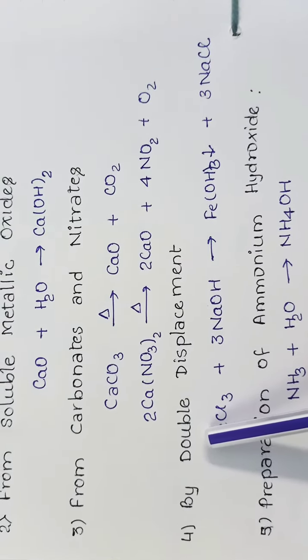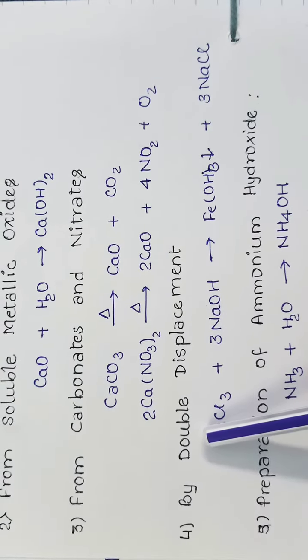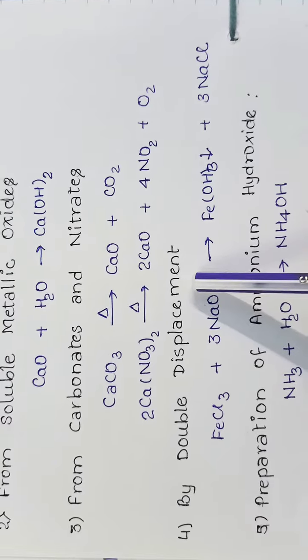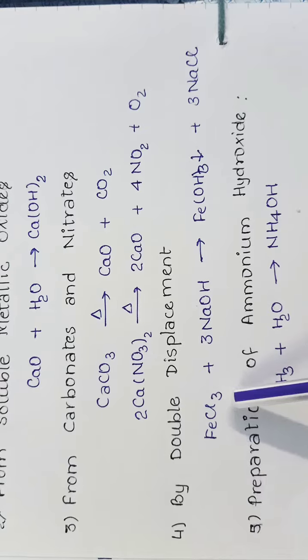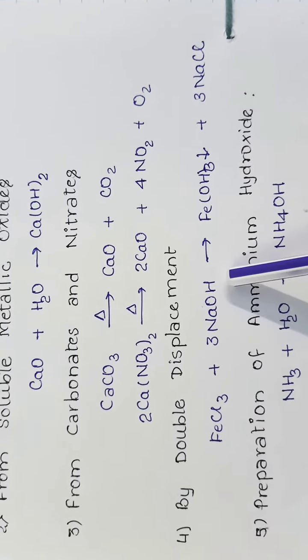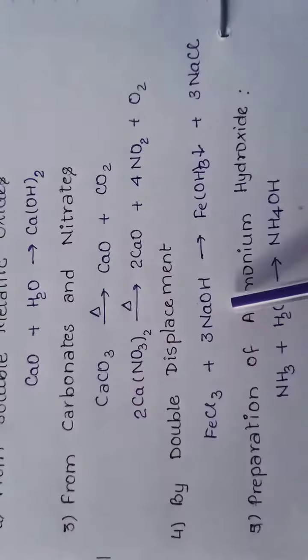We get bases by double displacement reaction also. Here we take ferric chloride, which is a type of salt, and sodium hydroxide, which is a base.